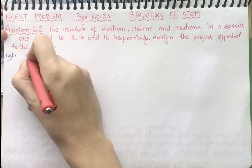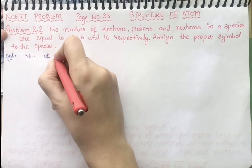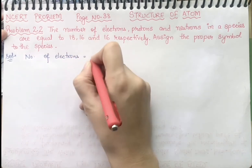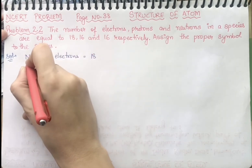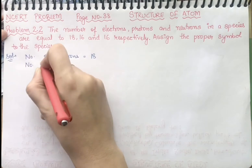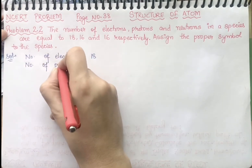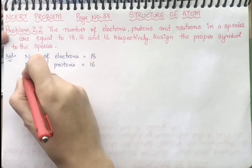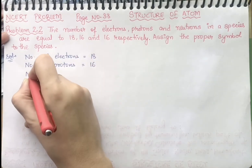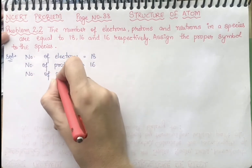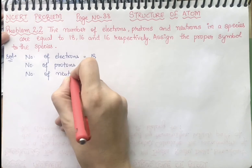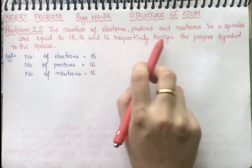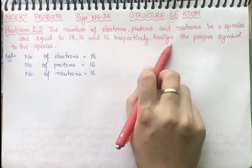First of all, we will write the given values: number of electrons equal to 18, number of protons equal to 16, and number of neutrons that are also 16.